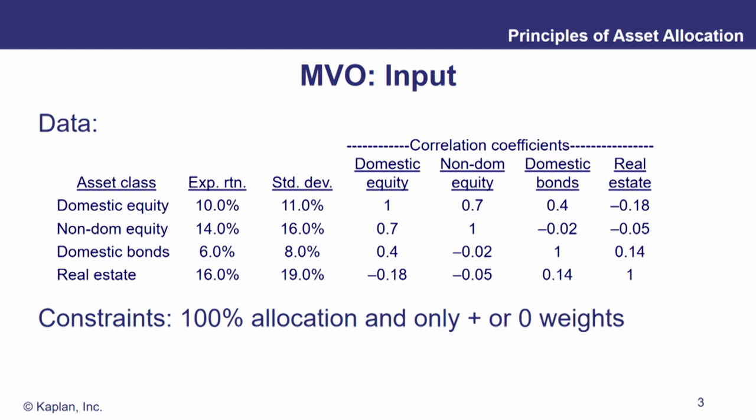Domestic equity has a 10% expected return with only 11% standard deviation. Non-domestic equity has a 14% expected return with a 15% standard deviation. Domestic bonds are 6% and 8% respectively. Real estate is 16% expected return and 19% standard deviation. So real estate has not only the highest expected return but also the highest standard deviation. As we churn through these results, we can start to get some intuition behind them.